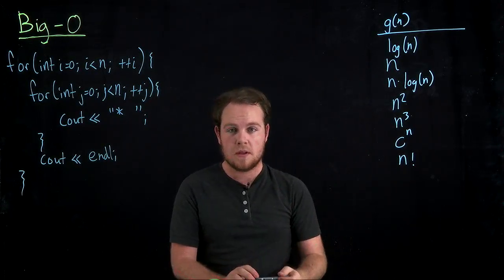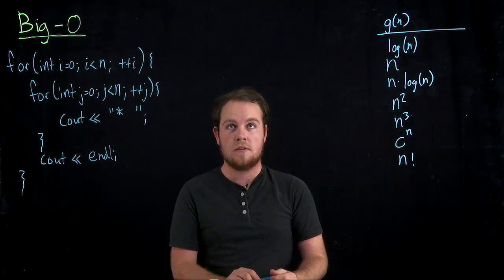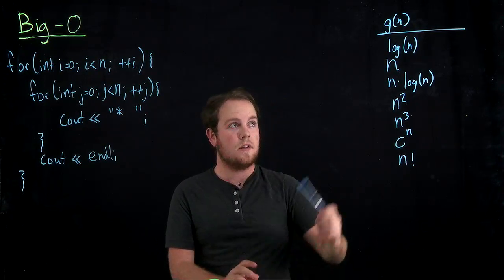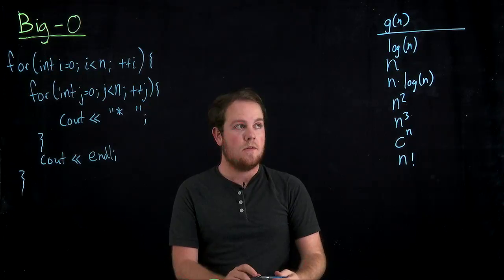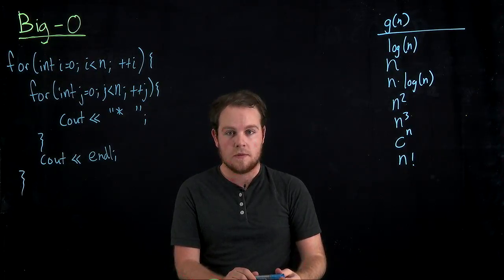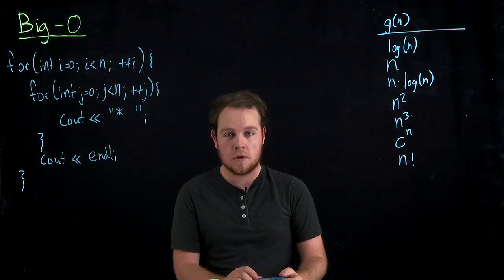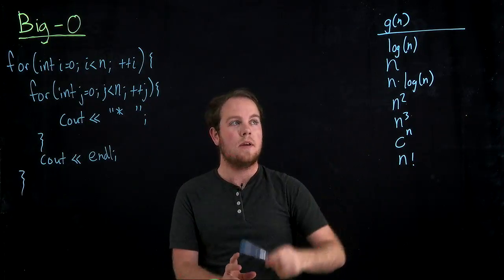For finding the minimum element in an unsorted array, it's going to take linear time. For sorting elements using merge sort, it'll be n log n, et cetera.